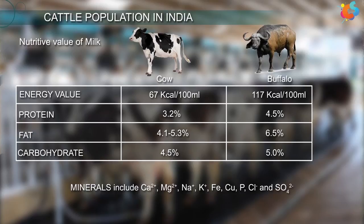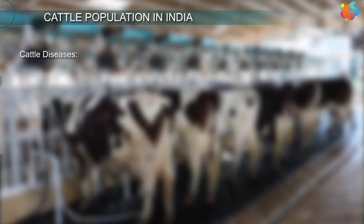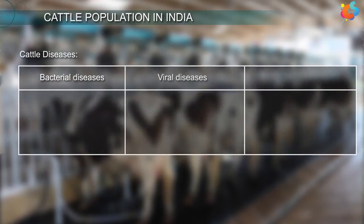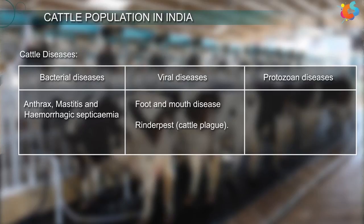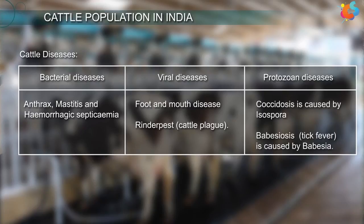Cattle are susceptible to various diseases including bacterial, viral, and protozoan diseases. Some of these are listed in the table. Bacterial diseases include anthrax, mastitis, and hemorrhagic septicemia. Viral diseases include foot and mouth disease and rinderpest (cattle plaque). Protozoan diseases include coccidiosis, caused by Isospora, and babesiosis or tick fever, caused by Babesia.